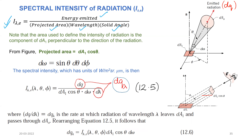Now we have to calculate the projected area of dA1. If dA1 is connected to the normal direction and moved by angle theta, then this area also moves by angle theta. So the projected area of dA1 is given by dA1·cos(θ). This is the normal direction, and this direction is parallel to area dA1. So the projected area equals dA1·cos(θ).